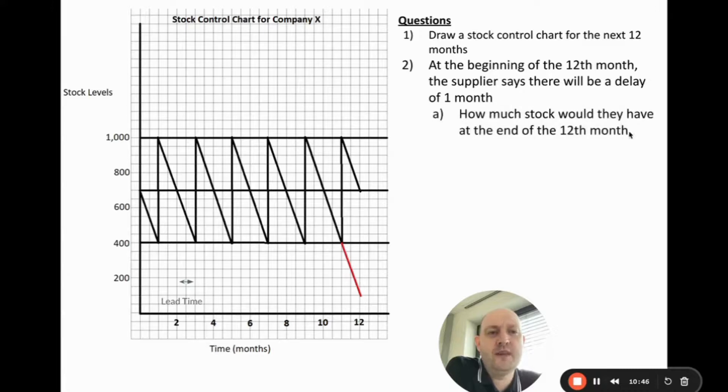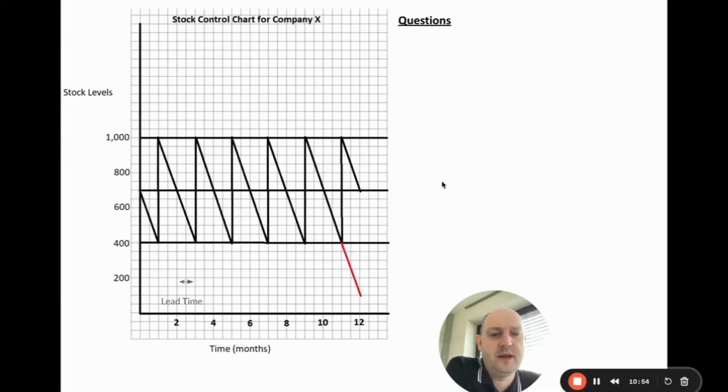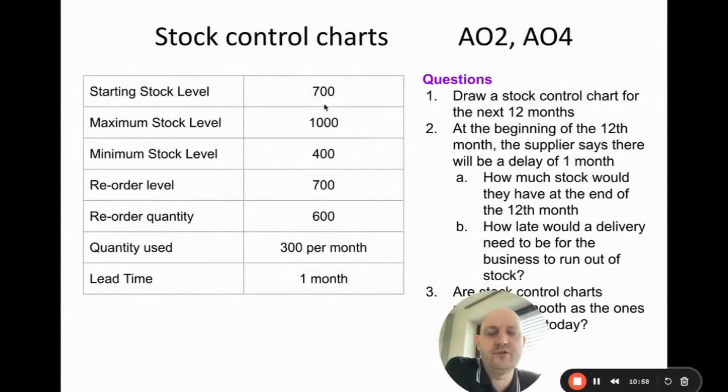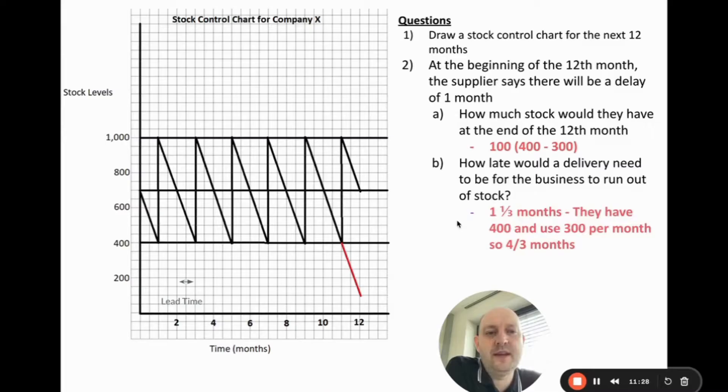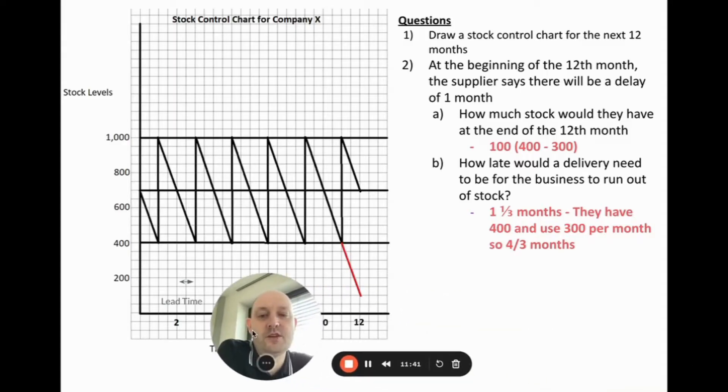At the beginning of the 12th month, the supplier says there'll be a delay of one month. So how much stock would they have at the end of the 12th month? I should also say that from the question we actually began at 700. The starting quantity level is 700. If the question doesn't tell you, then you should assume that it begins at the maximum. But in this situation it begins at 700, which means we trigger a reorder immediately. At the beginning of the 12th month they start at 400, and there should be an order arriving but it doesn't. So they go from 400, they use 300 per month, so at the end of the 12th month they'll have 100. How late would the delivery need to be? They have 400, they use 300 per month, so after four-thirds of a month, which is one month and one-third, they would run out of stock.